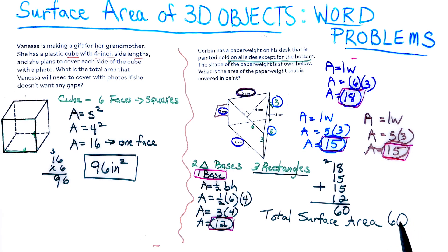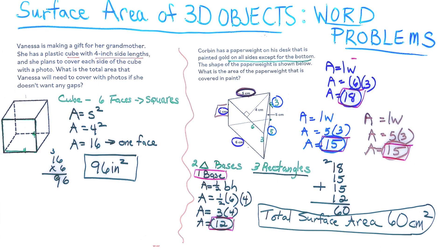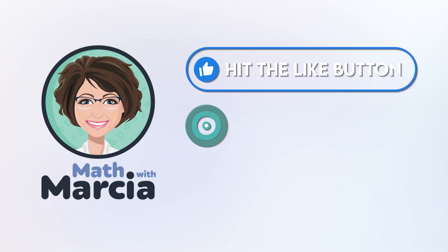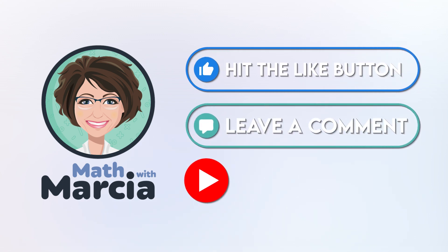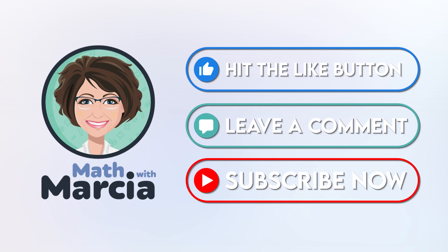The total surface area that's painted gold is 60 centimeters squared. This is our answer for the problem. If this video was helpful to you today, please add a like, comment, and most importantly subscribe for more Math with Marcia. See you again soon.